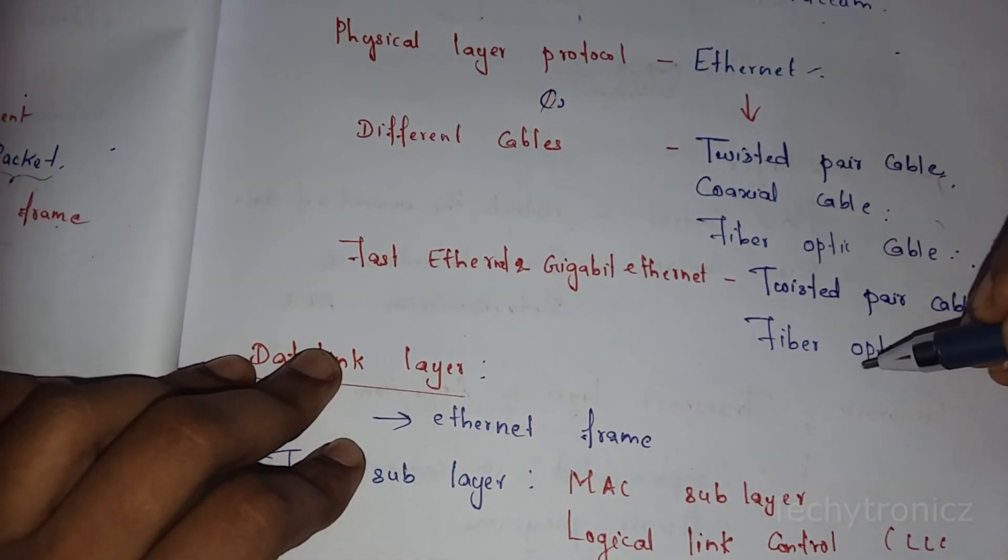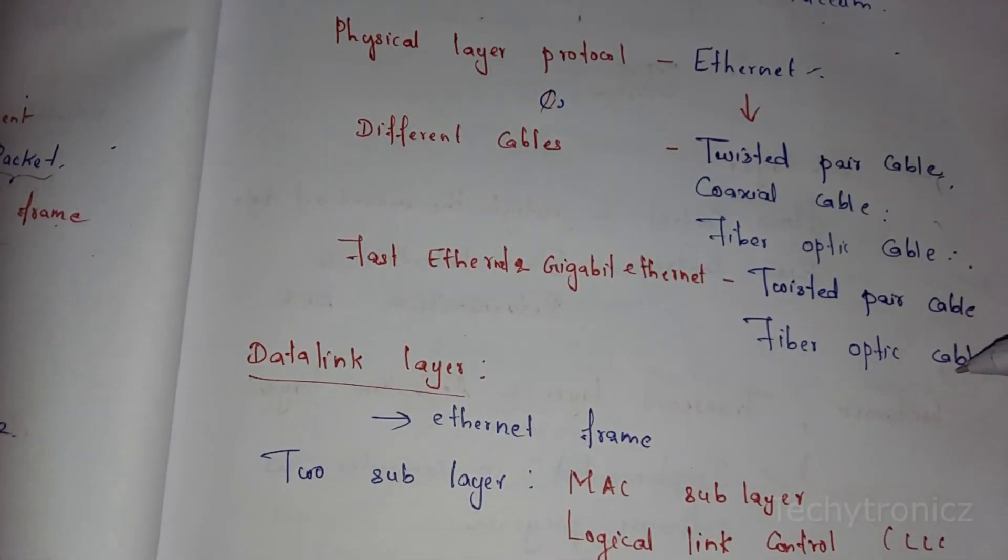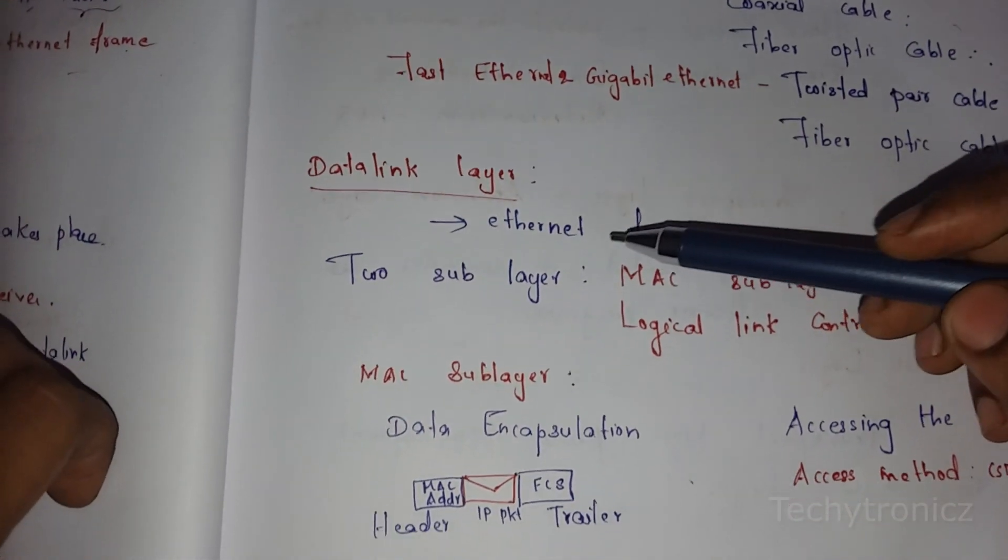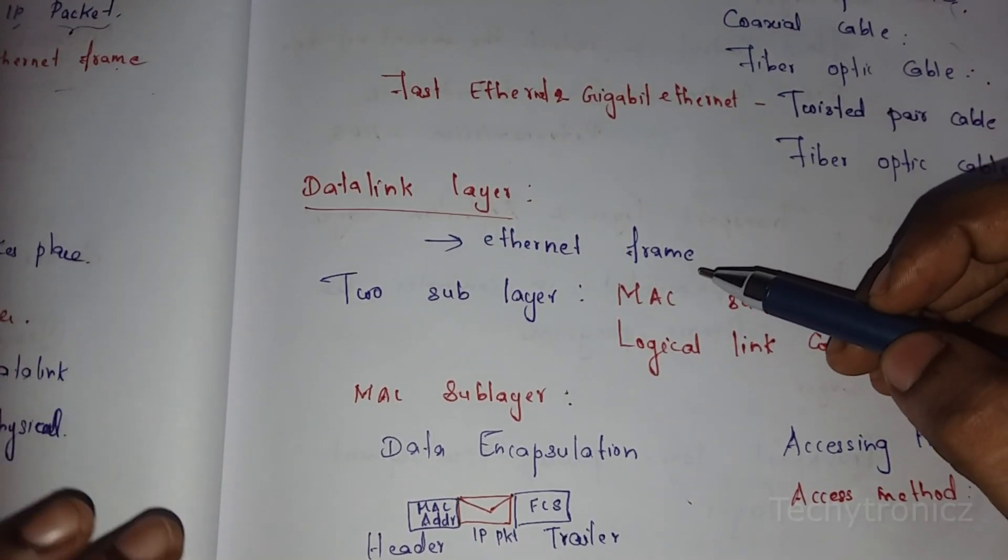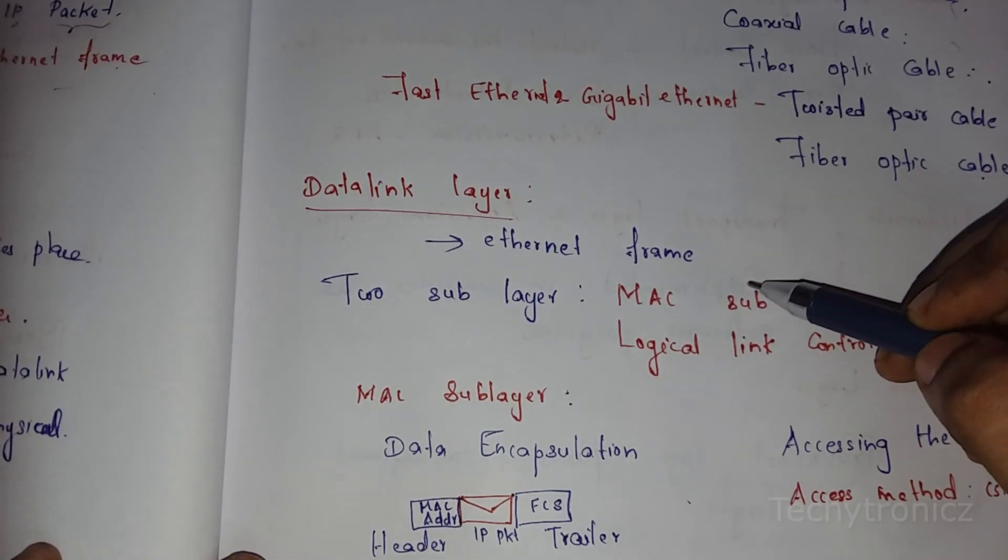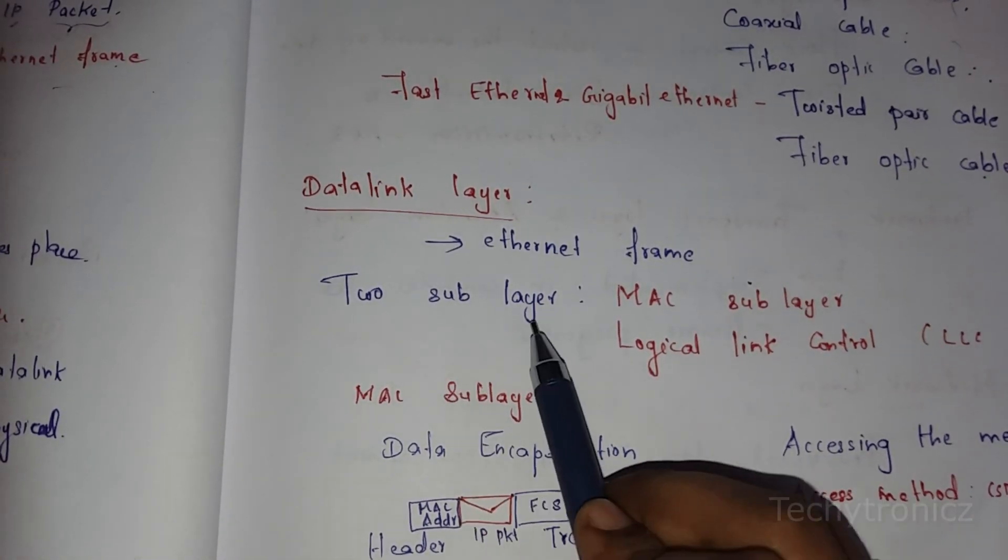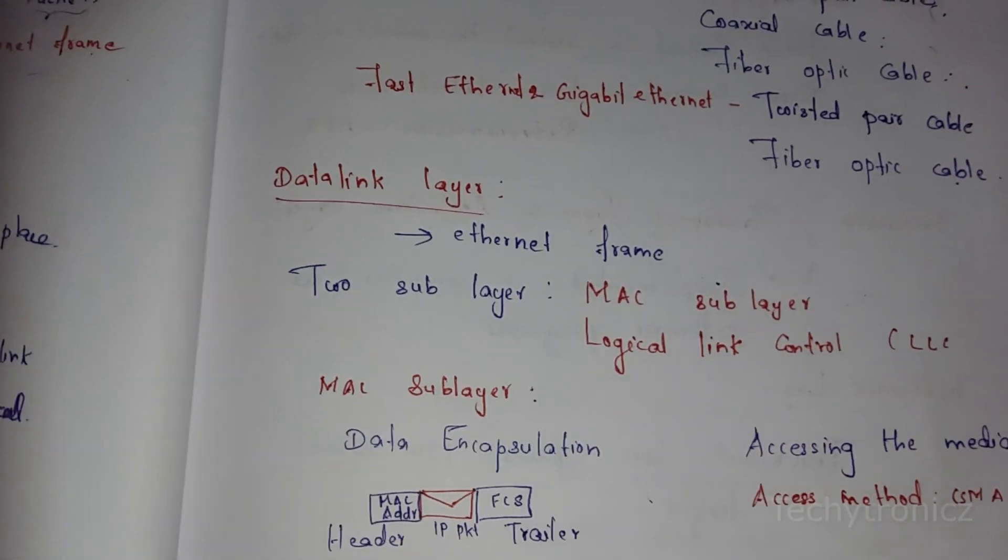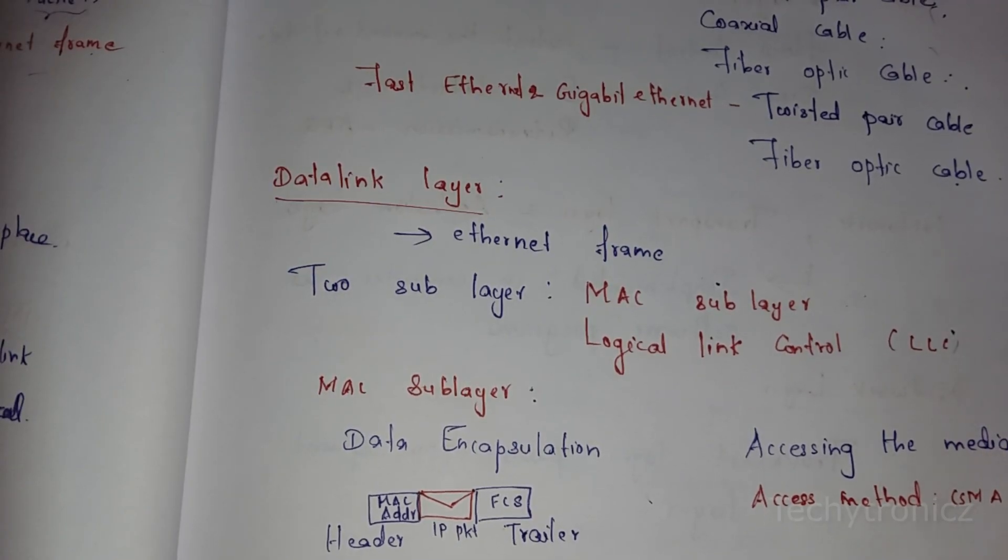The next layer is the Data Link Layer, which creates frames called Ethernet frames. The Data Link Layer has two sublayers: the MAC sublayer and the Logical Link Control (LLC) sublayer.